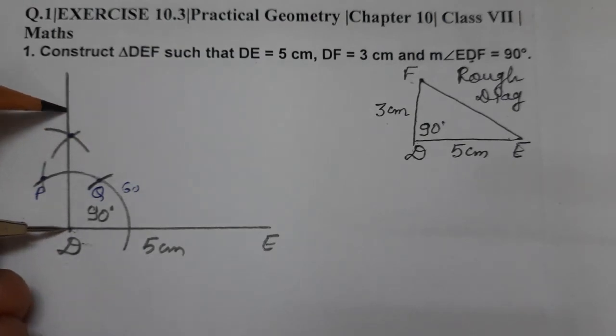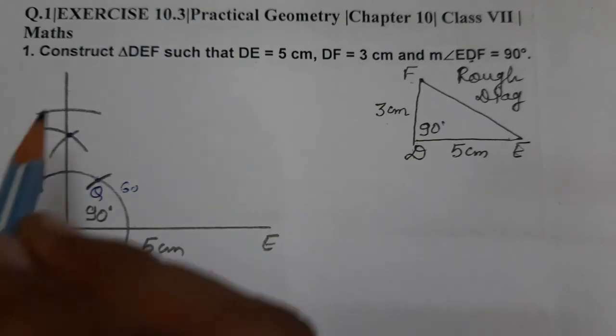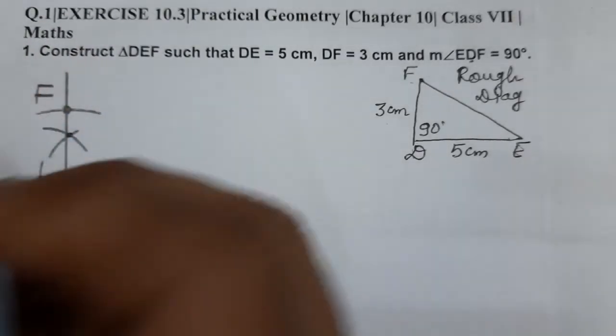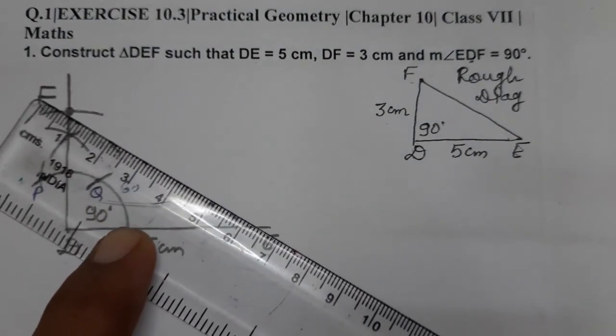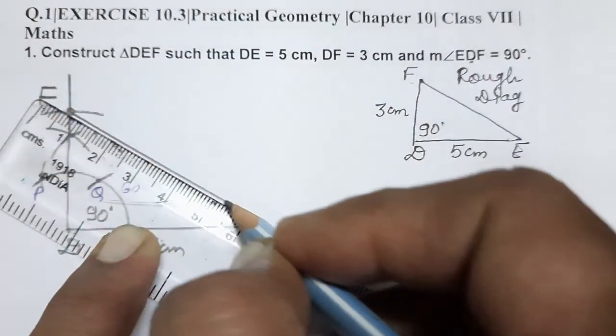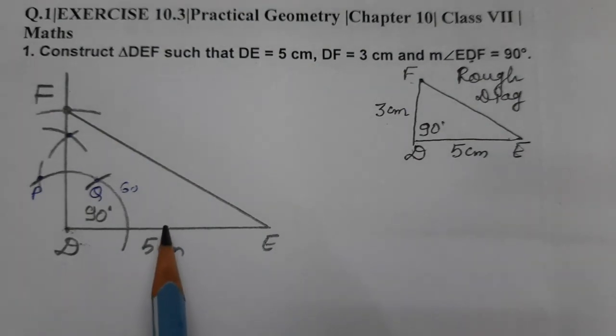So this point comes to be known as F. This point is F. Now if we join F to E, we are joining F to E. Let's join F to E and see, our triangle is constructed. We have completed this triangle DEF using ruler and compass only.